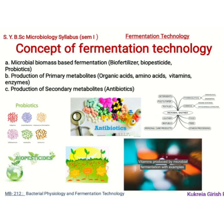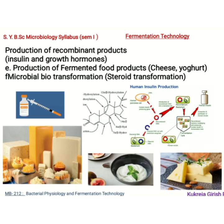We will know the importance of microorganisms by having an overview of the various products produced using microbes. First, when microorganisms themselves are the products, that is microbial biomass-based fermentation — biofertilizers, biopesticides, and probiotics. We will talk about production of primary metabolites such as organic acids, amino acids, vitamins, and enzymes, and secondary metabolites like antibiotics. We will also discuss production of recombinant products like insulin and growth hormones, fermented foods such as cheese and yogurt, microbial biotransformation, and different kinds of steroid transformation.